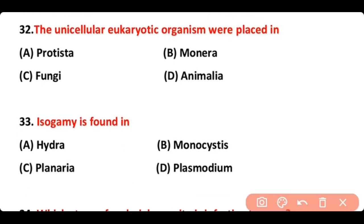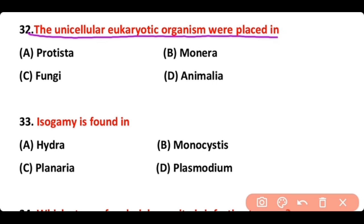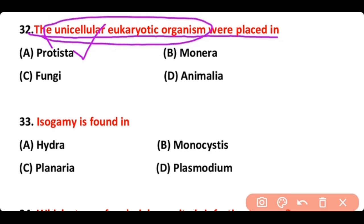Question number 32: The unicellular eukaryotic organisms were placed in — Protista, Monera, Fungi, or Animalia? The correct answer is option A. Unicellular eukaryotic organisms are placed in Kingdom Protista.